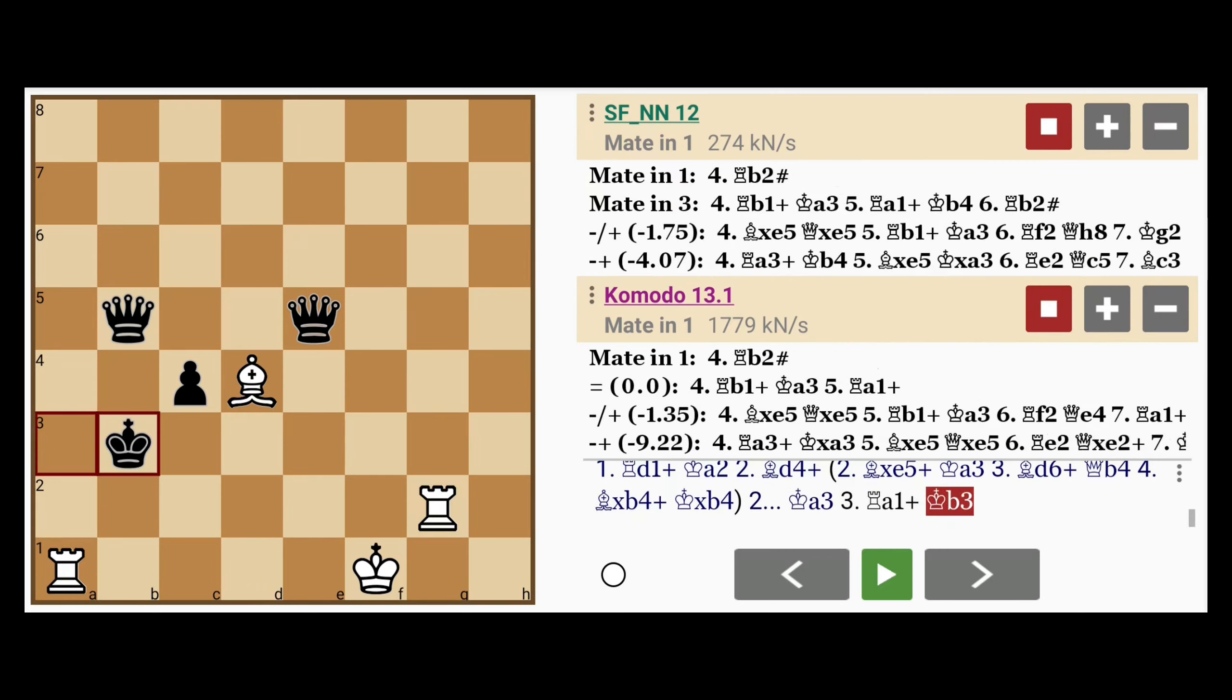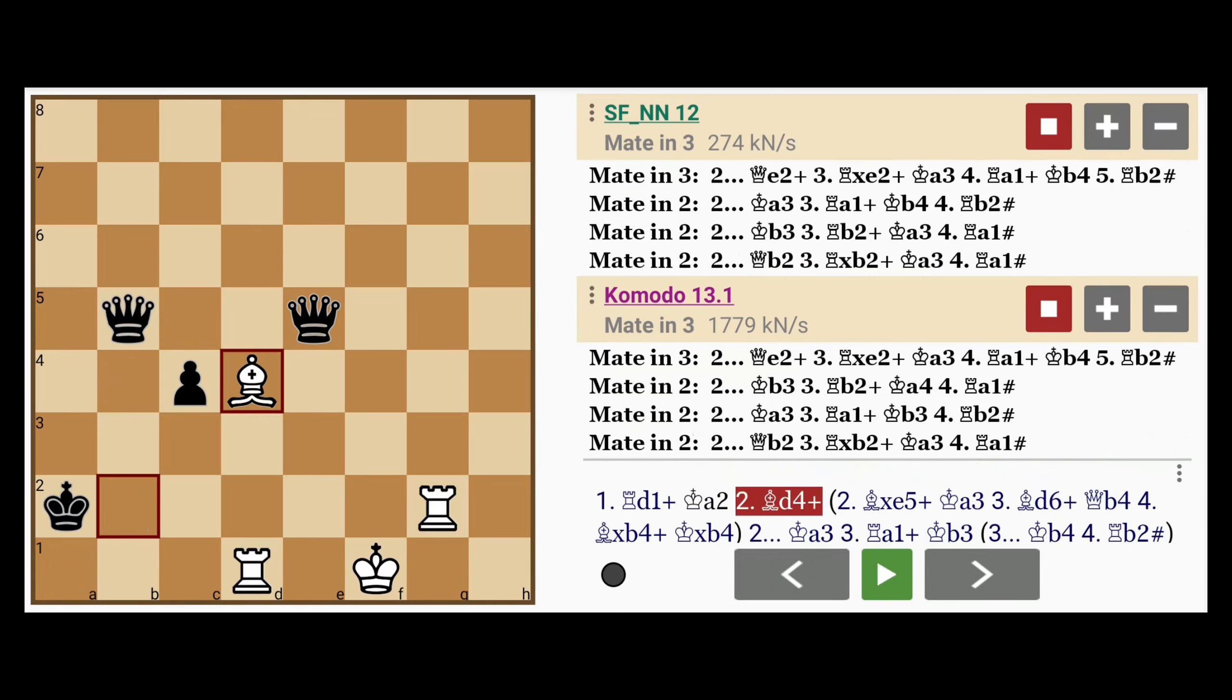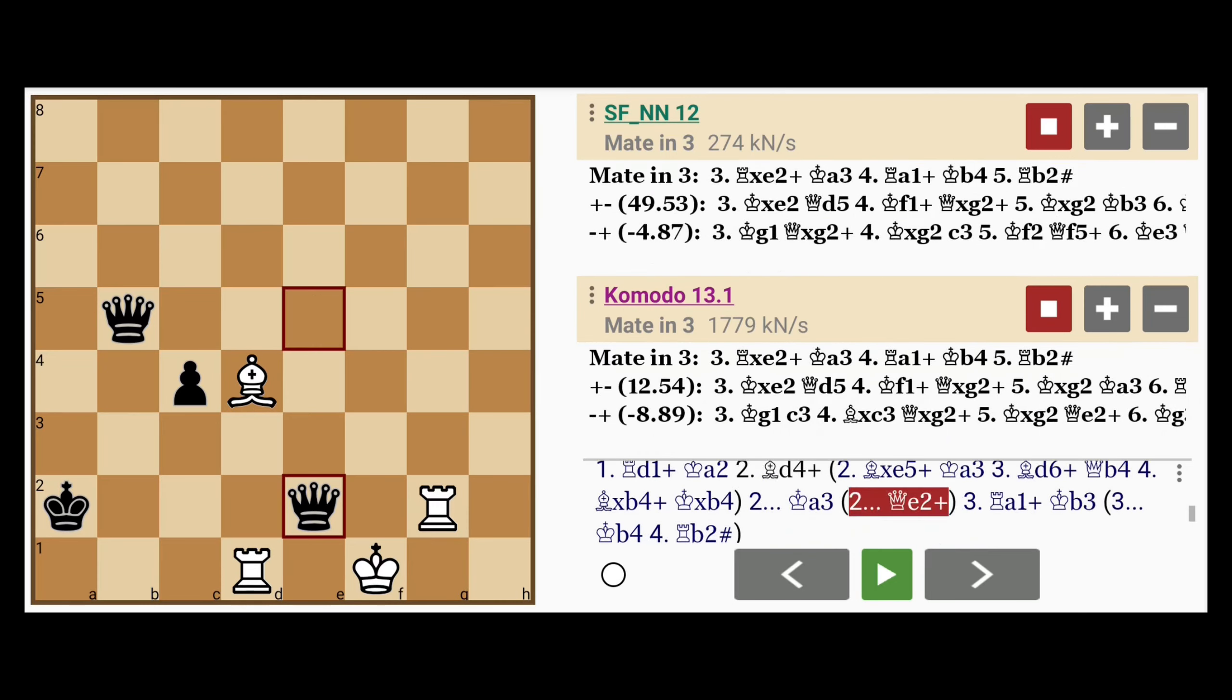And then if king to b3 or king to b4, rook to b2 mate. Now you can see why the bishop didn't go all the way and capture the other queen. It would leave the c5 square unguarded.